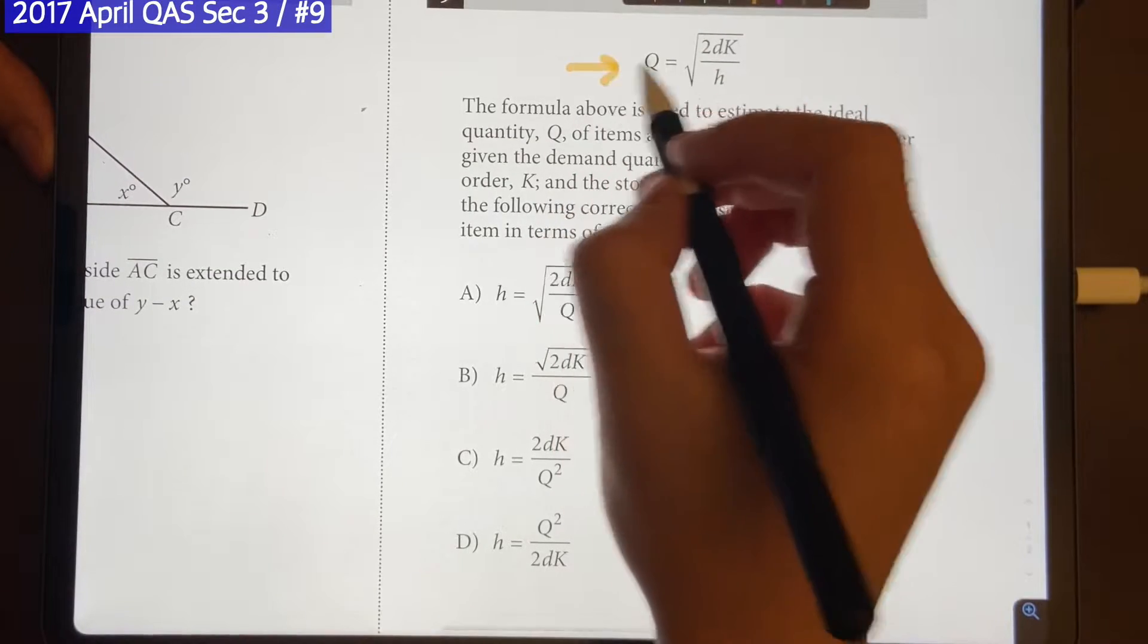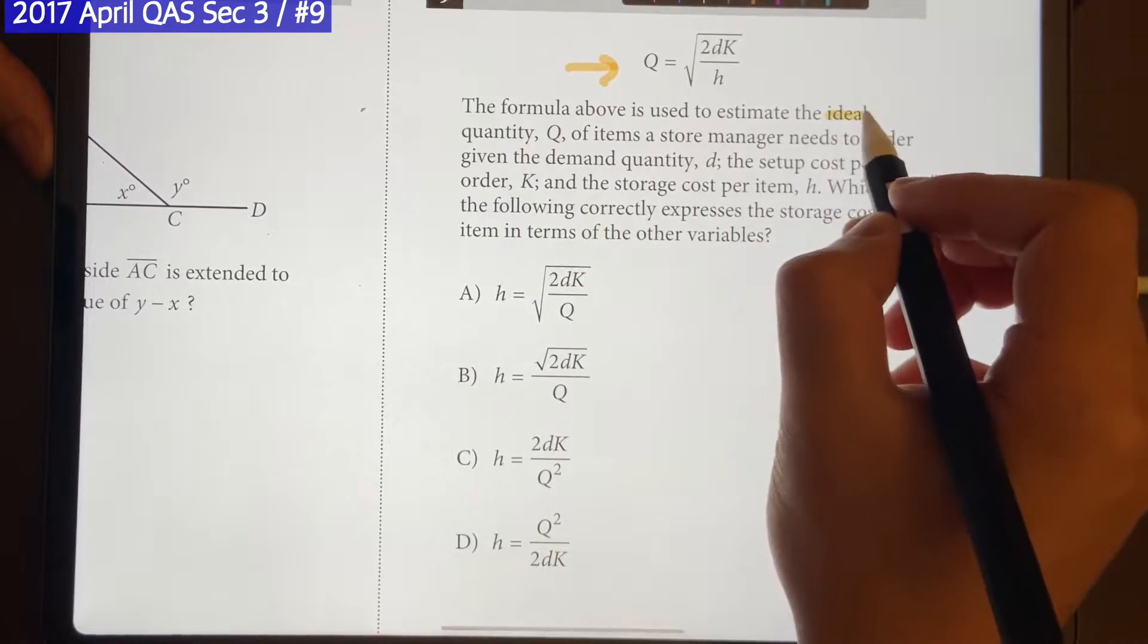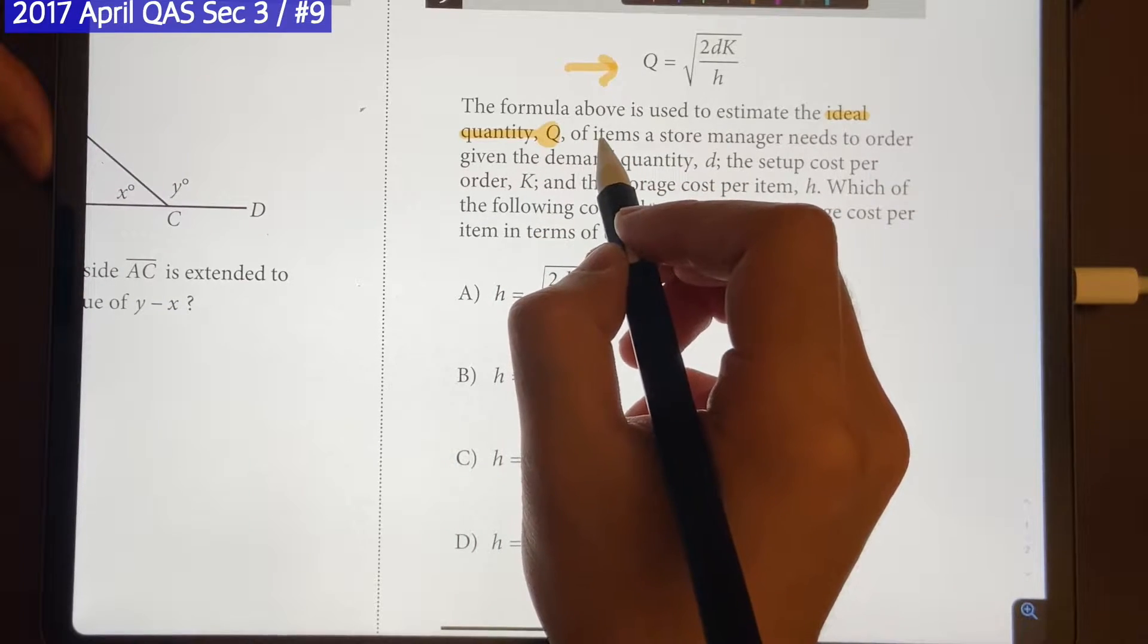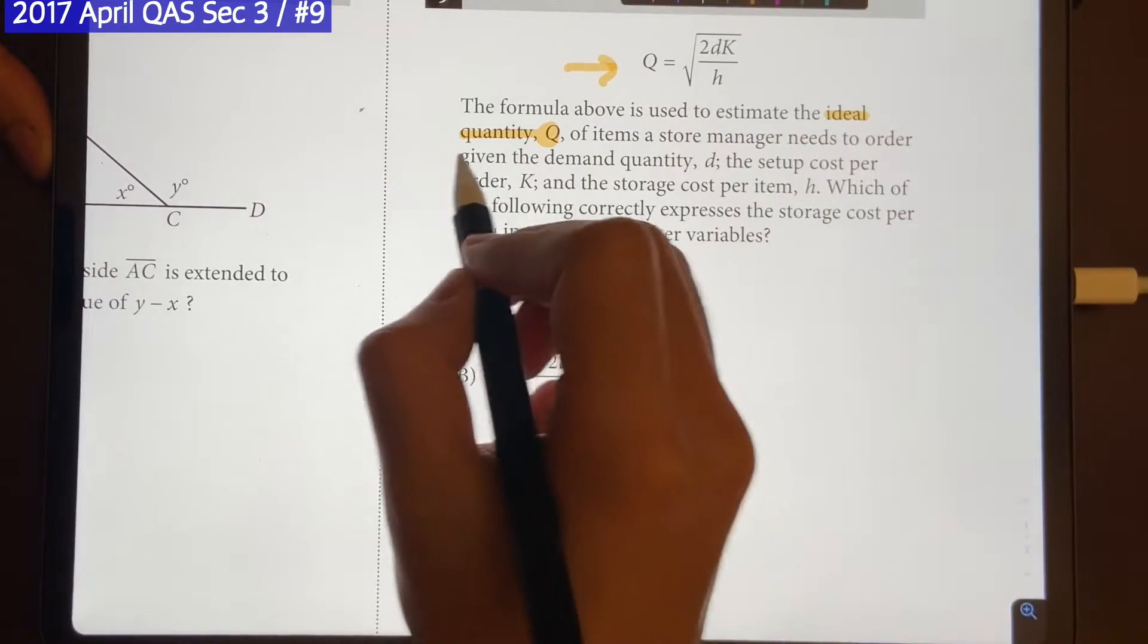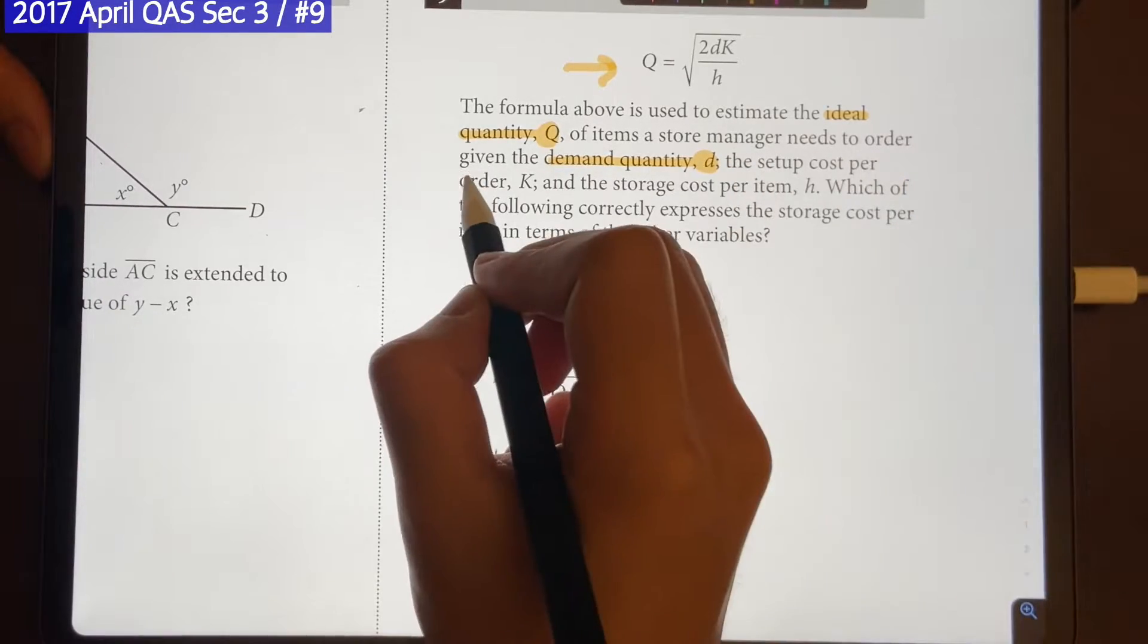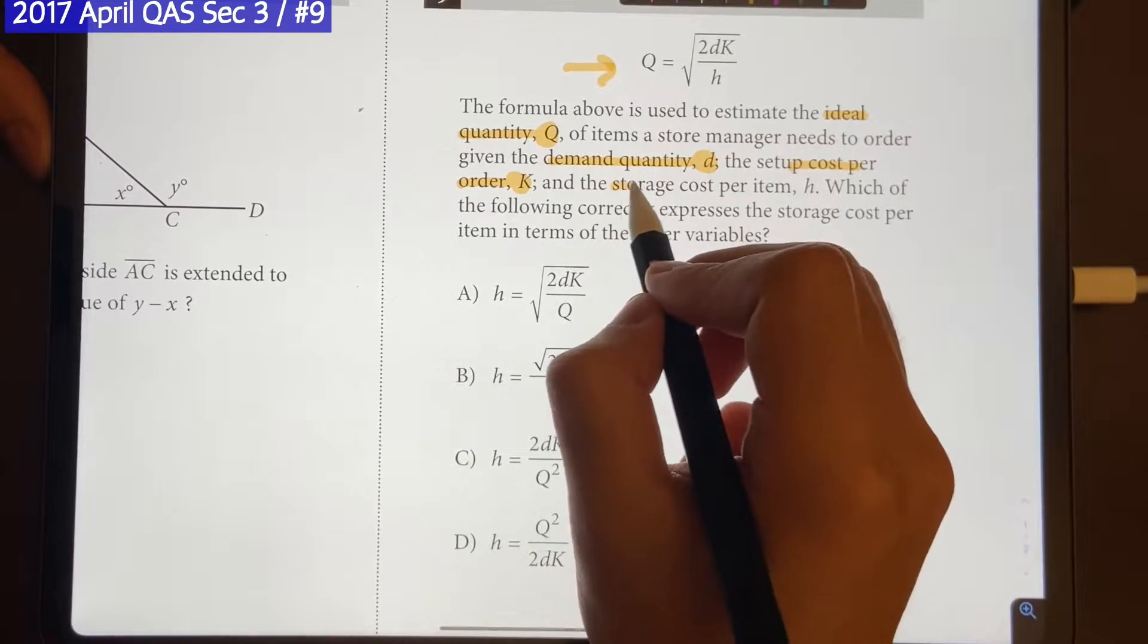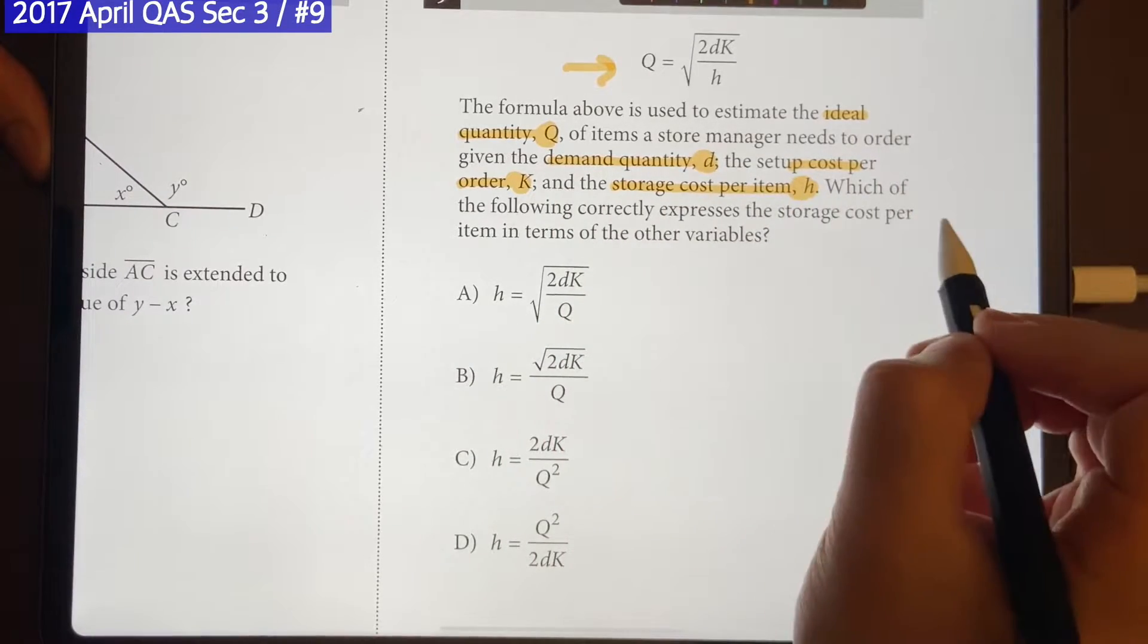So we have this equation on the top right here. The question says the formula above is used to estimate the ideal quantity, represented by Q, of items a store manager needs to order given the demand quantity D, the setup cost per order which is represented by K, and the storage cost per item which is represented by H.